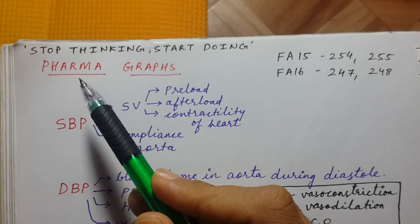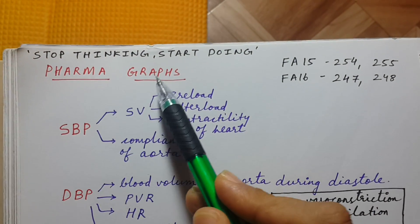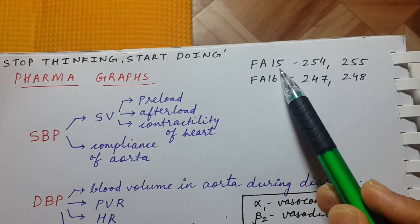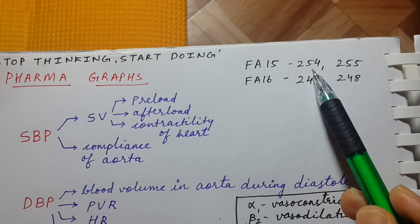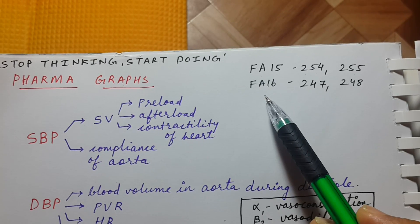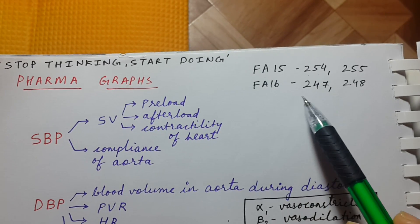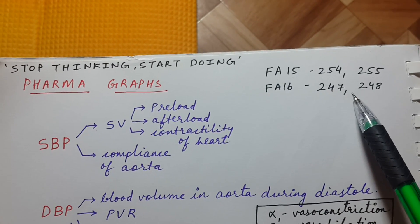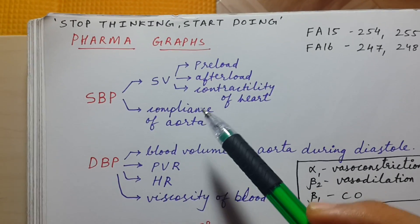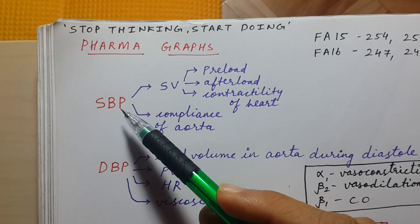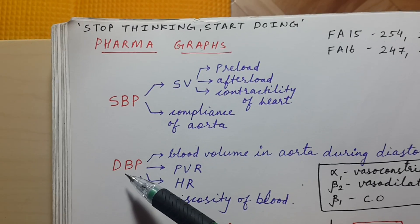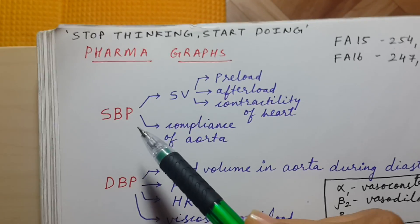Hello everyone, today we will be discussing the pharma graphs. This topic is given in First Aid 2015 on page number 254 and 255, and in First Aid 2016 on page number 247 and 248. Before starting the graphs, we will first see the factors affecting systolic blood pressure and diastolic blood pressure.